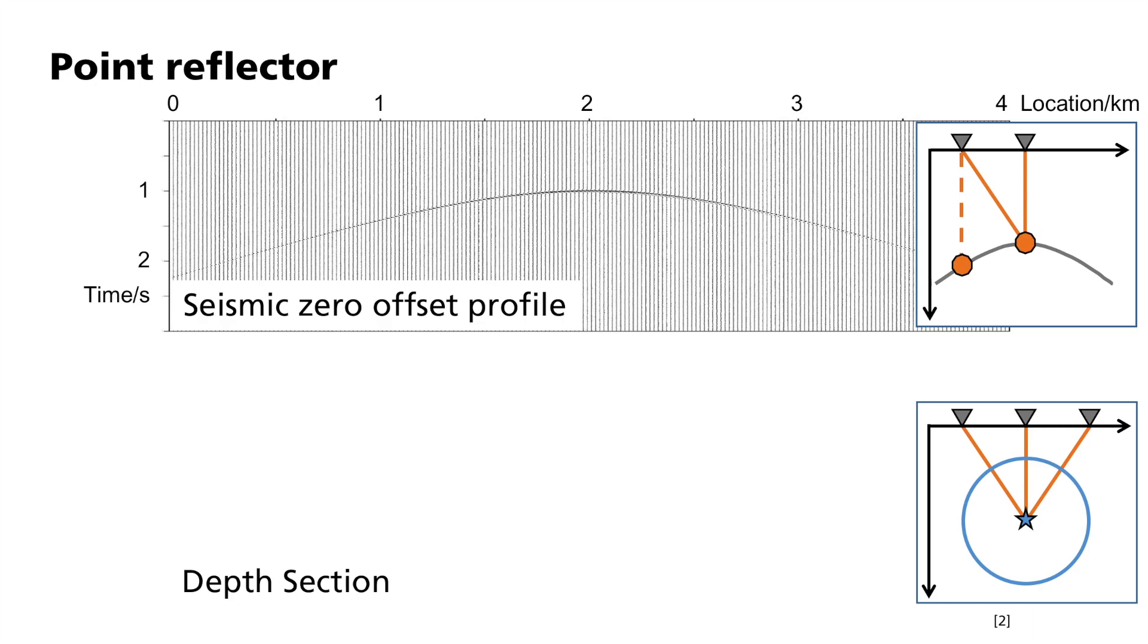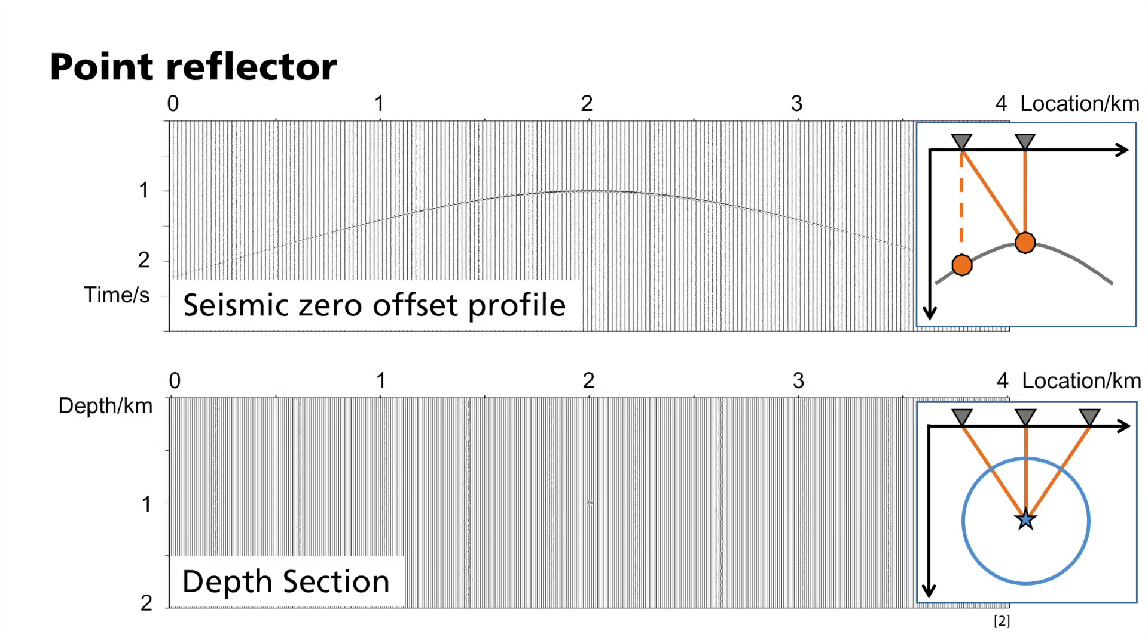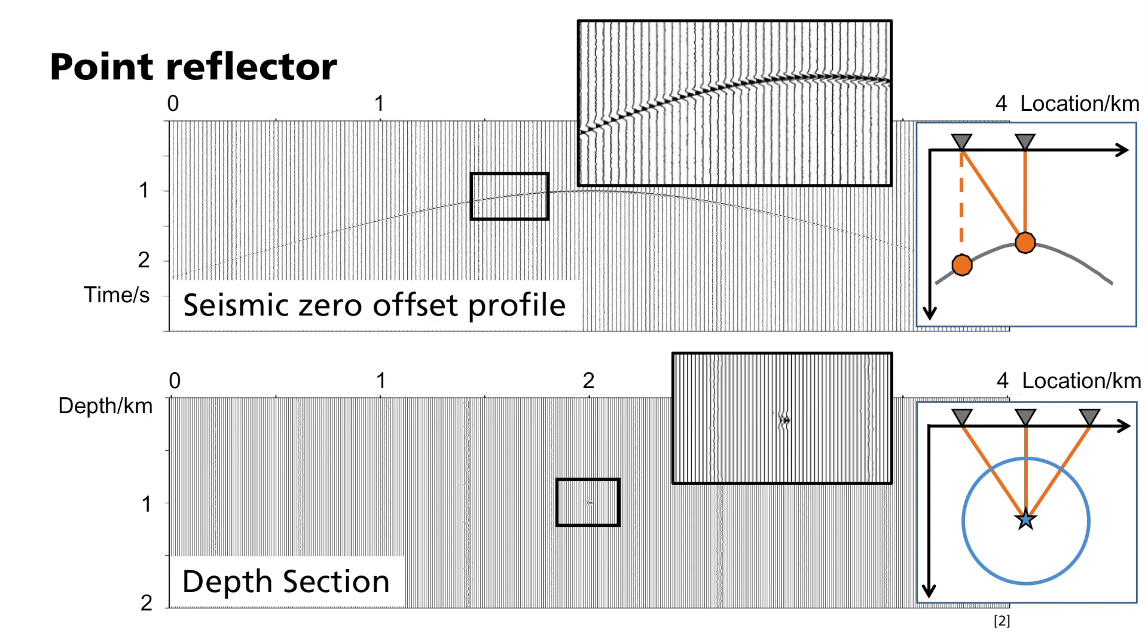Here you can see the entire wave field. It consists of seismograms that have been synthetically calculated along the surface. In addition, you can also see the depth section below, including the original scattering body. To better recognize the wave inserts, positive deflections are colored black. This forward calculation should now be reversed by migration.